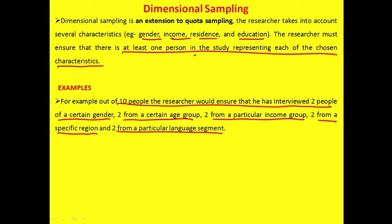In summary, the types of non-probability sampling are: accidental or convenient sampling, purposive or judgment sampling, snowball or chain referral sampling, quota sampling, and dimensional sampling — which is an extension of quota sampling.